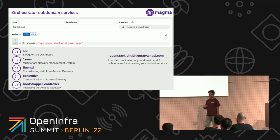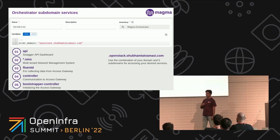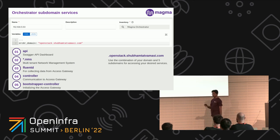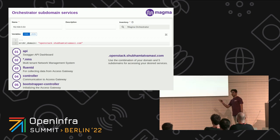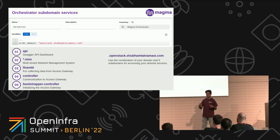When we expose five different services, for example with a domain name like shubhamz.com, we get five different subdomain services. One is the API — that will be a Swagger API dashboard. Using Swagger API we can manage our entire platform, all networks, services, and everything. The second is NMS, a network management system with a dashboard where we can control all our hardware such as access gateways, manage subscribers, data plane, and everything. The last three components are FluentD, Controller, and Bootstrap Controller — these three services establish communication between the access gateway and the orchestrator.